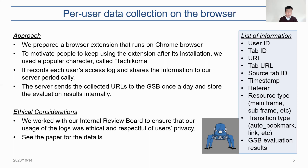Here are the lists of information we collected: user ID, tab ID, URL, tab URL, source tab ID, timestamp, referrer, resource type, transition type, and Google Safe Browsing evaluation results. Resource type identifies the type of resources such as mainframe, subframe, script, and image, and the identification relies on the Google Chrome API. Transition type identifies the reasons of transition such as bookmark access, address typing, and link access, and the identification again relies on the Google Chrome API.